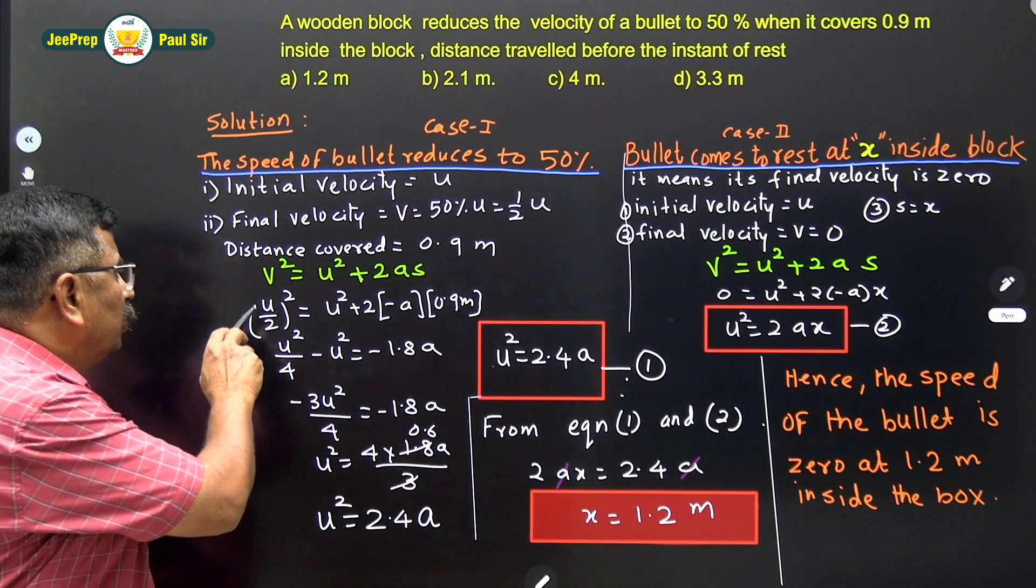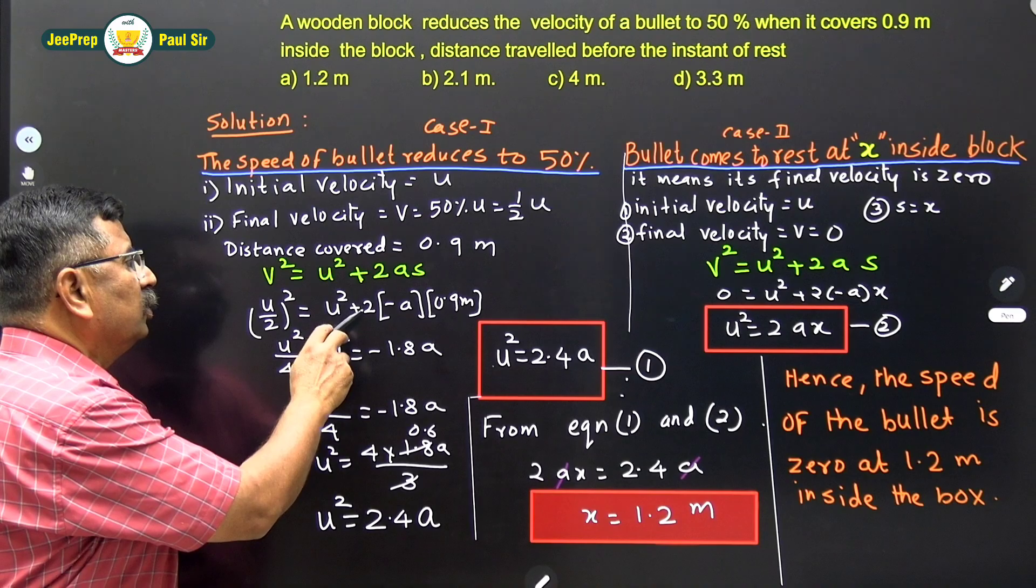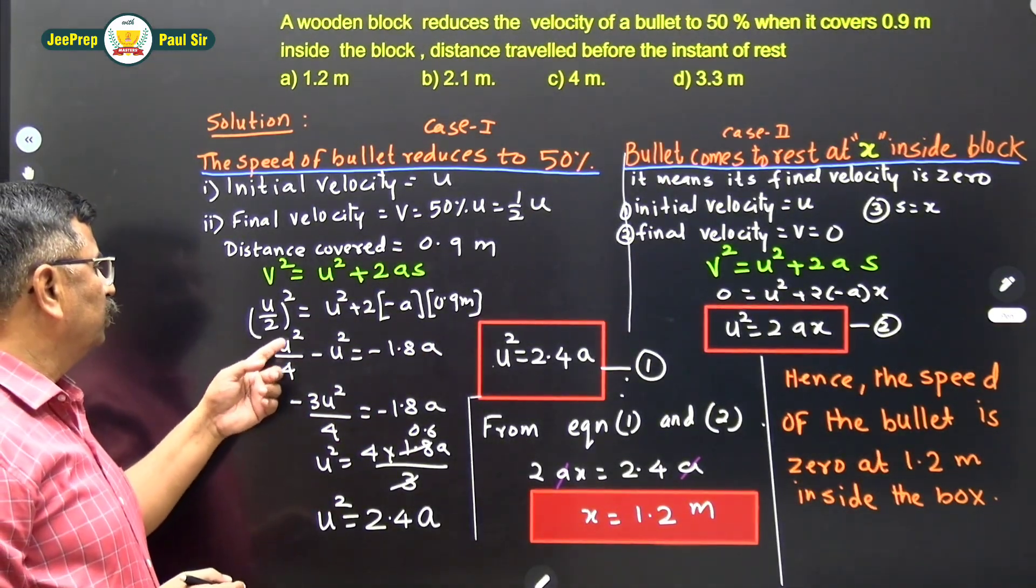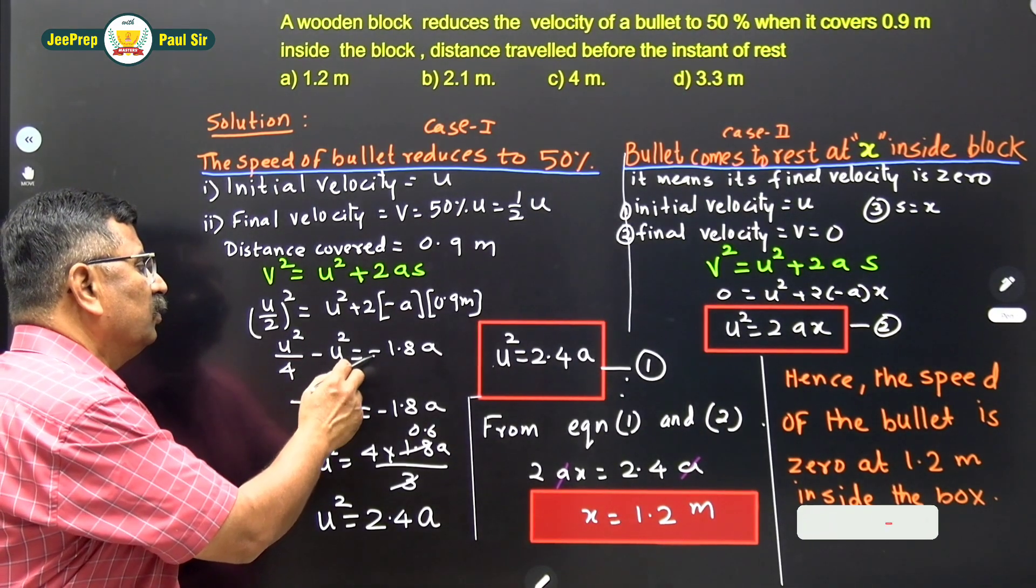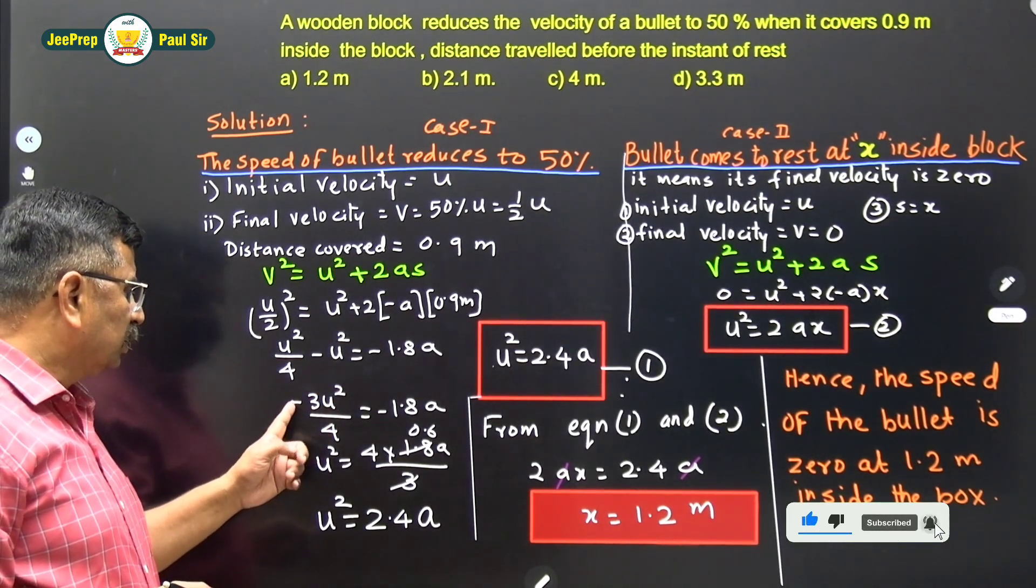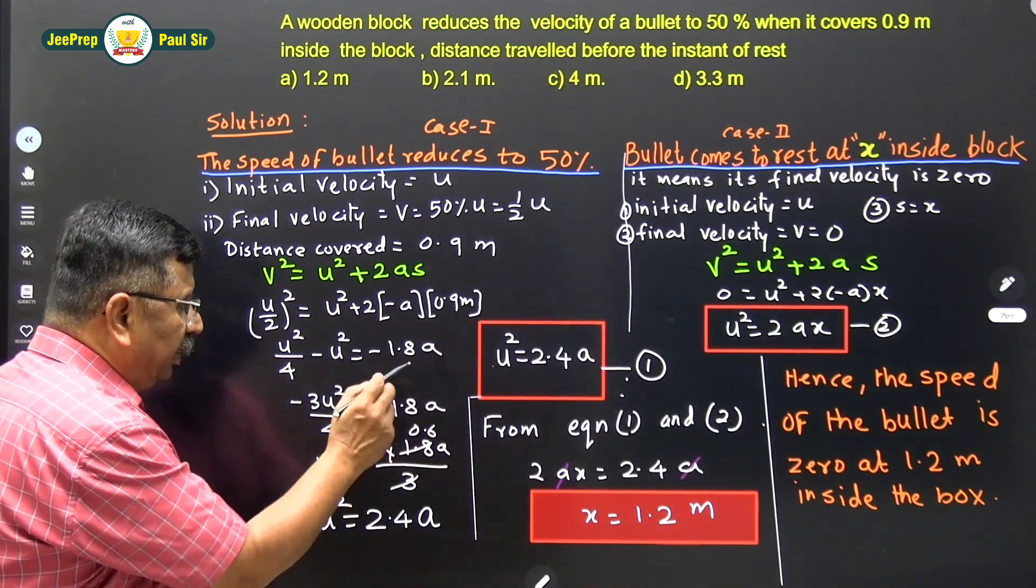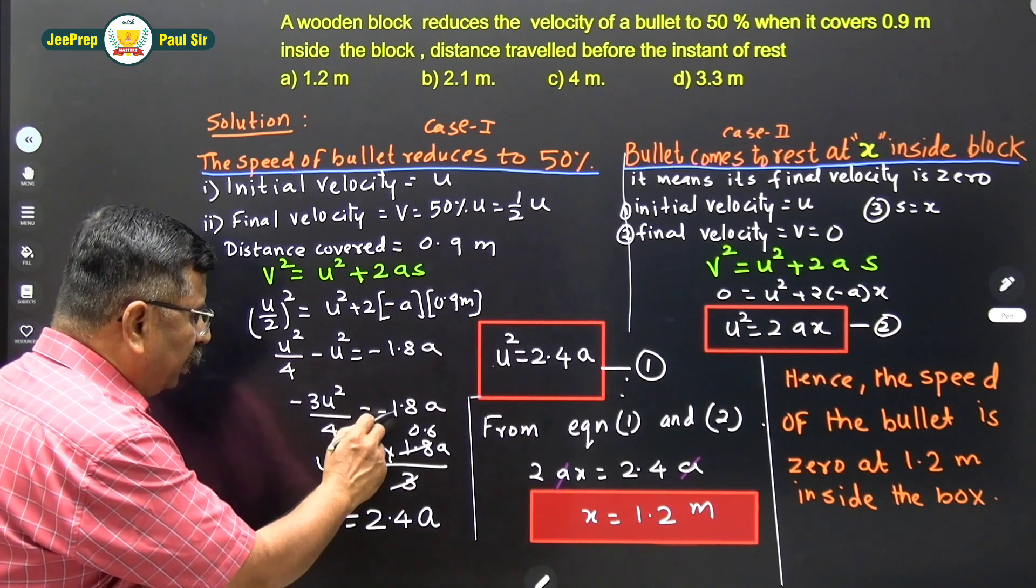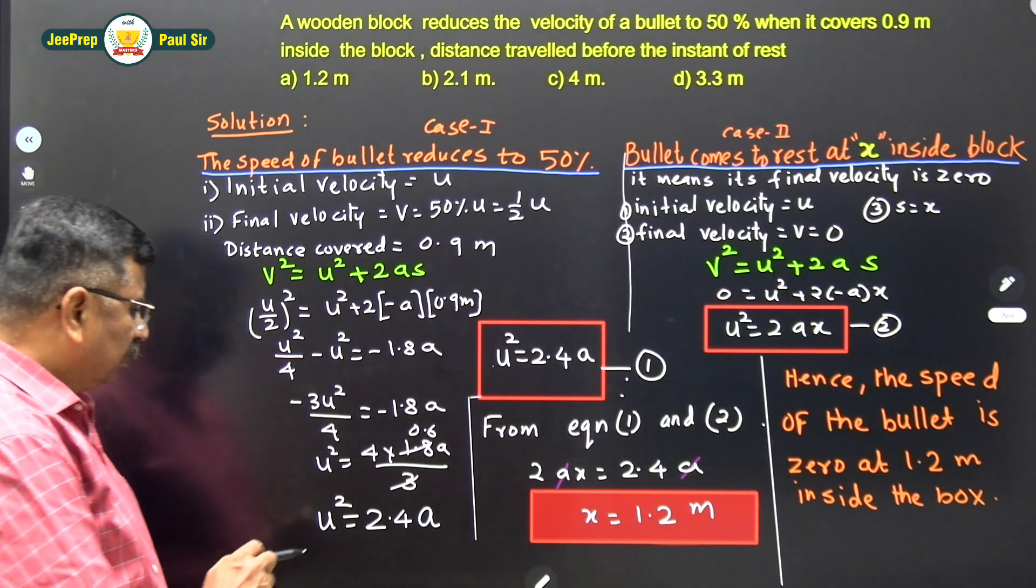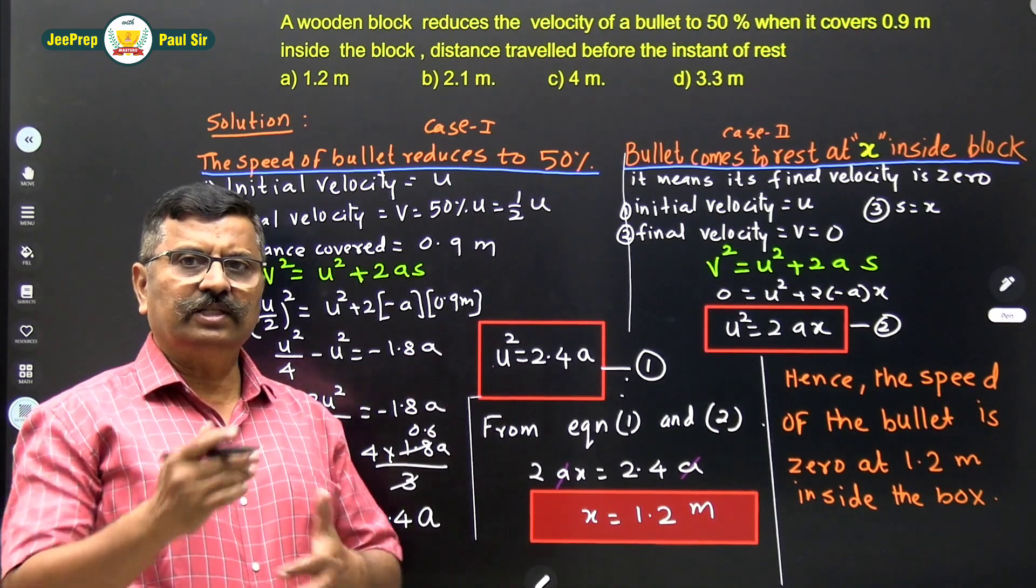Therefore, final velocity v is equal to u by 2, the whole square, initial velocity is u, u square is equal to 2 into minus a into 0.9m. And therefore, this is u square by 4 minus u square is equal to minus 1.8a. Now, when you solve this, this comes out as minus 3 u square by 4 is equal to minus 1.8a. And u square is equal to 4 into 1.8a divided by 3 and this minus and minus will become plus. Therefore, u square comes to be 2.4a.